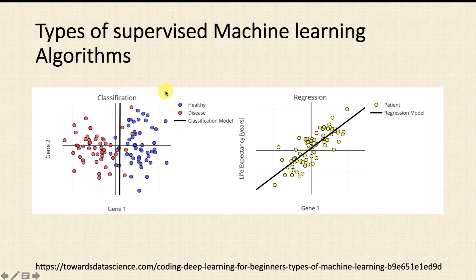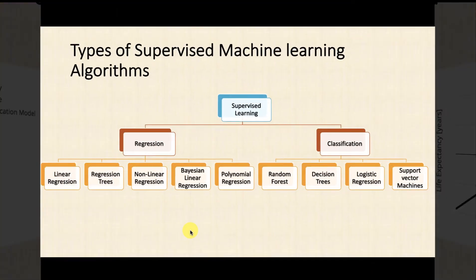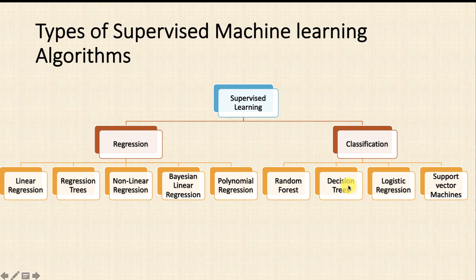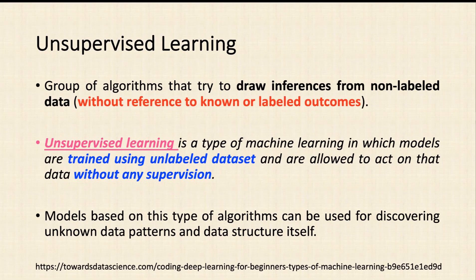We'll talk about these in detail in later videos. For regression algorithms, you have linear regression, regression tree, non-linear regression, Bayesian linear regression, and polynomial regression. For classification you have random forest, decision tree, logistic regression, and support vector machines. These are very important and frequently used algorithms in machine learning. We'll cover each algorithm practically with code in later videos.